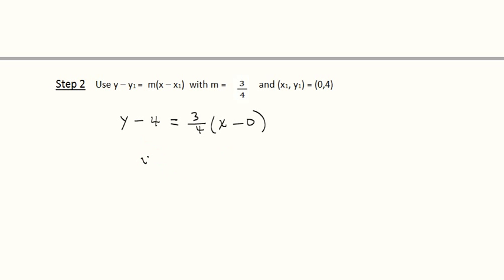So we simplify that, we get y minus 4 is equal to 3 fourths times x, since x minus 0 is just x. And then we add 4 to both sides, and we get y equals 3 fourths x plus 4.